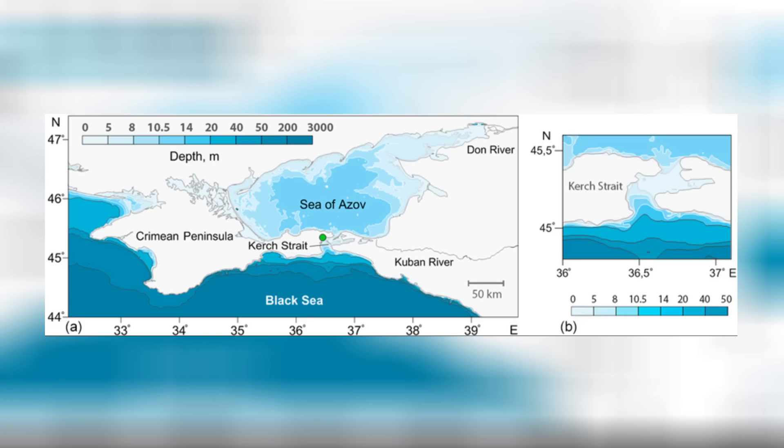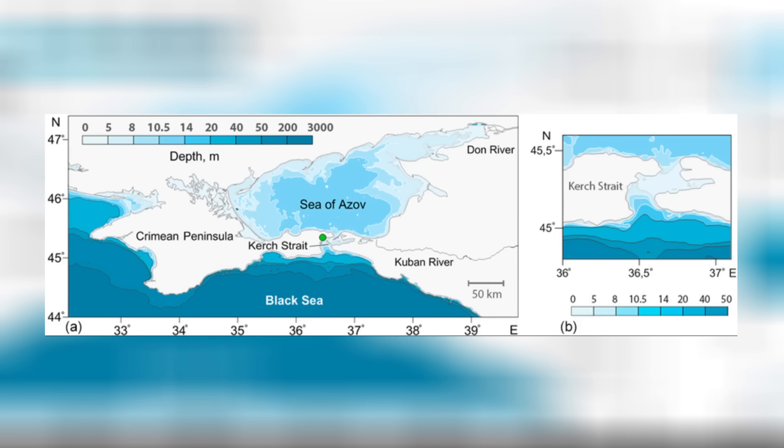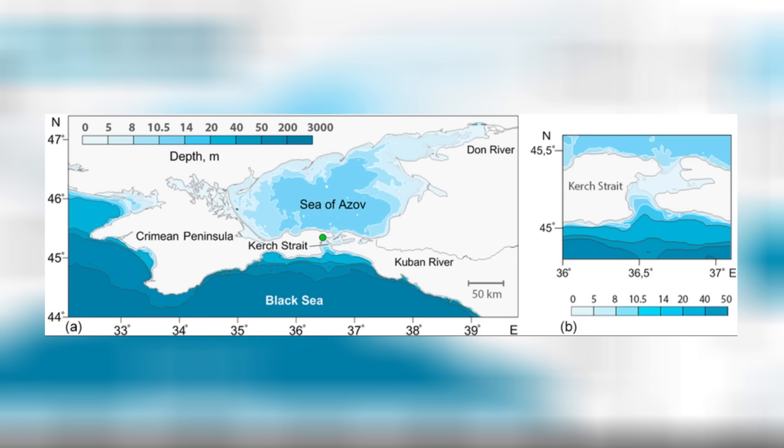Something that's really important to mention about the Sea of Azov is that it is extremely shallow. Despite it being around 15,000 square miles, it has a maximum depth of just 14 meters, or around 46 feet, and an average depth of around 7 meters, or just 23 feet.